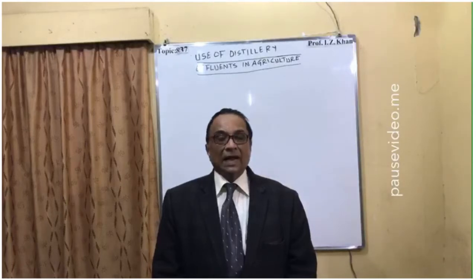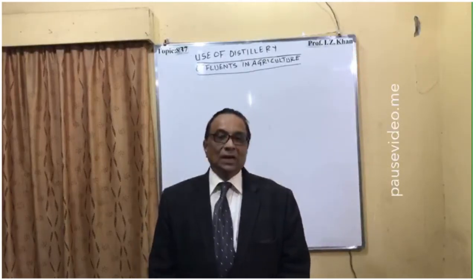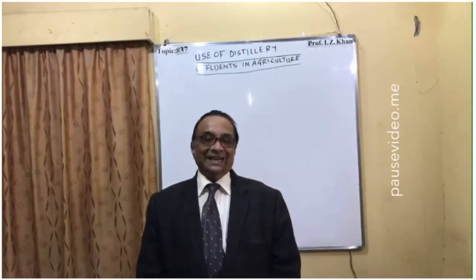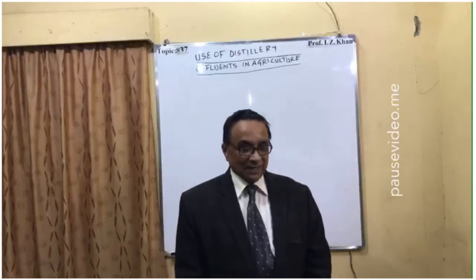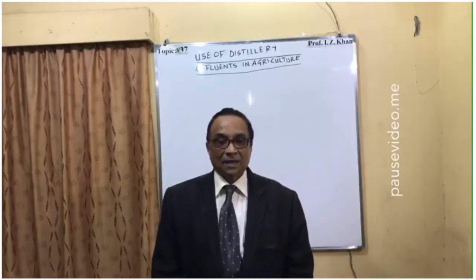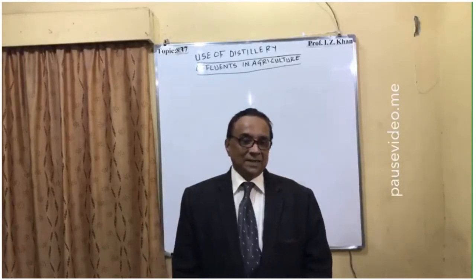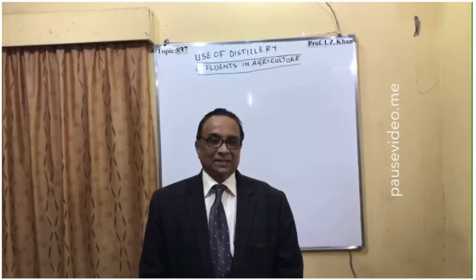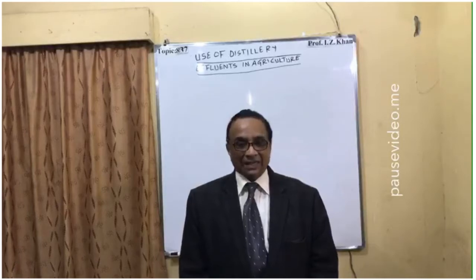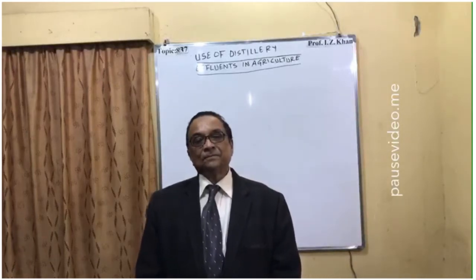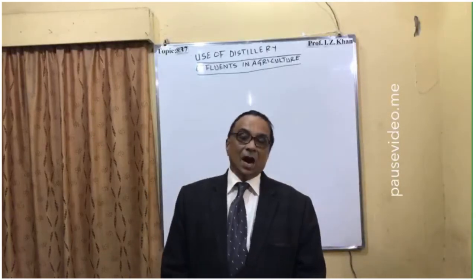Hello everyone, you are all welcome to lecture number 837. Today's topic is the use of distillery effluents in agriculture. This distillery effluent is called spent wash, where fermentation of molasses is done and alcohol is produced. The spent wash — the leftover material — is not good for the environment; it is an environmental hazard, and that is why it is better to treat it and convert it into manure, or fertilizer.